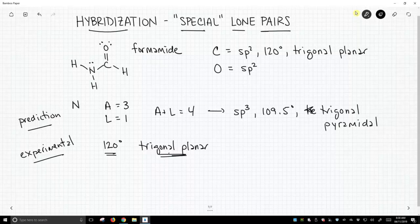If you look at this combination of bond angle 120 and geometry trigonal planar, this is all consistent with that nitrogen. Instead of being sp3, it is sp2. So what's happening here?